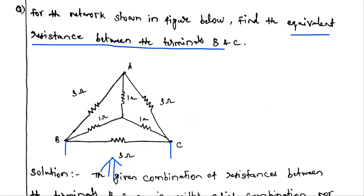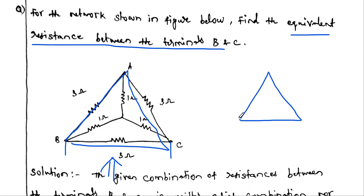Instead, we use another configuration. We already studied star and delta connections in a previous video. The outer network — nodes A, B, C — has three 3 ohm resistors connected in a delta shape. The inner network has three 1 ohm resistors connected in a Y (star) connection. So there is one delta connection and one star connection in this network.